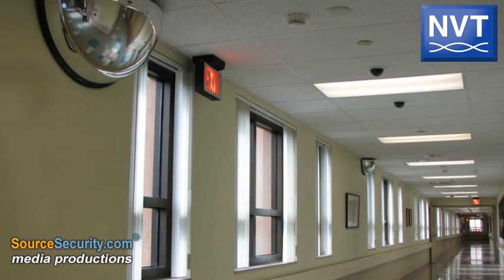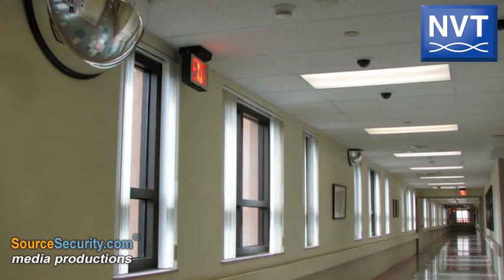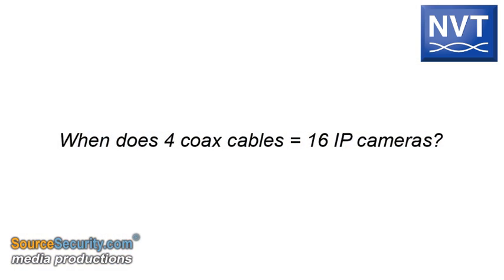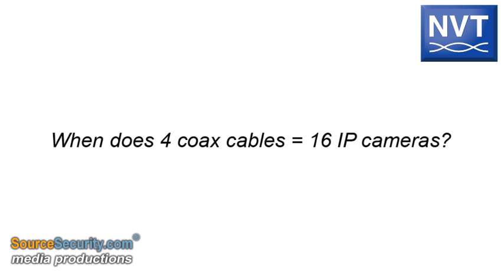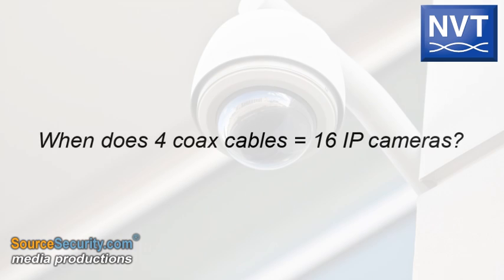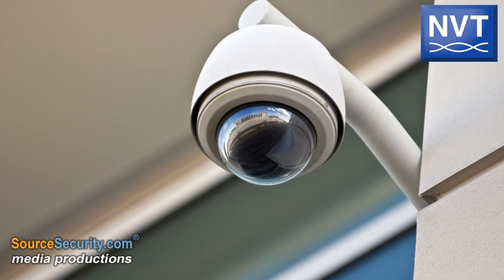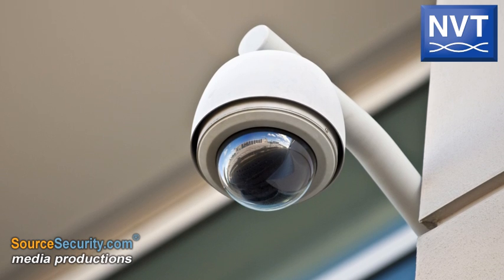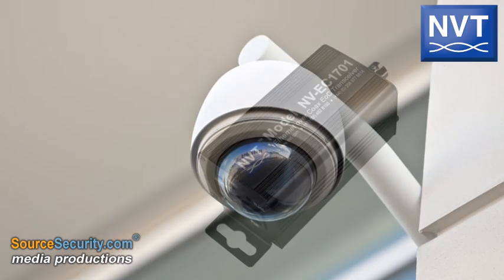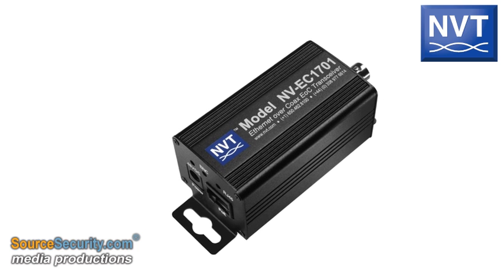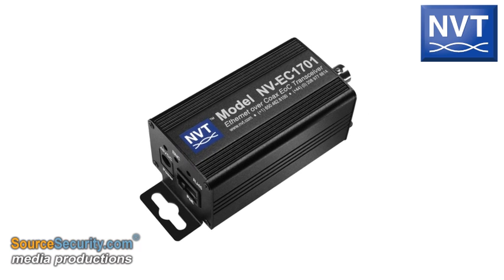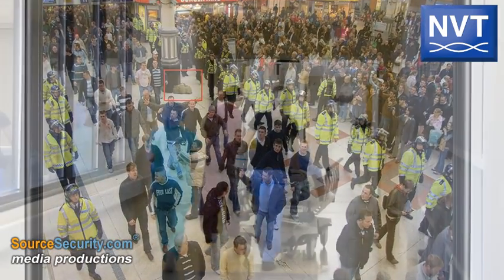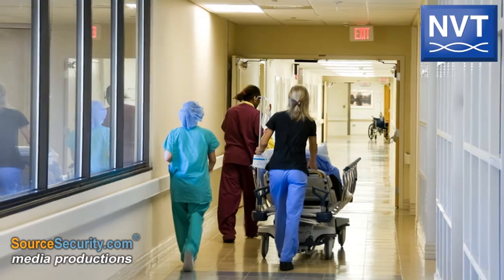The goal was to increase the camera count to a total of 16 cameras. Initially, the additional surveillance system needed to be megapixel IP and were to be connected via newly installed UTP cable runs. But by deploying EOC technology, the hospital was able to connect four additional IP cameras to each of the four existing coax cable runs, for a total of 16 IP megapixel cameras. NVT EOC enabled site management to take full advantage of an economical upgrade using the latest megapixel and analytic surveillance technology, while preserving the historic integrity and continuous operation of the facility.